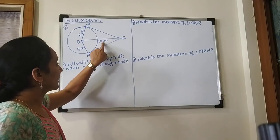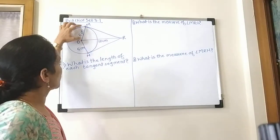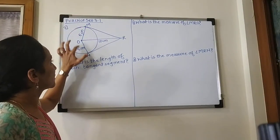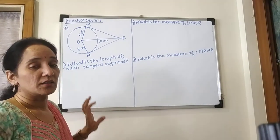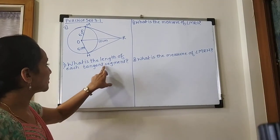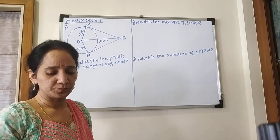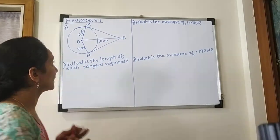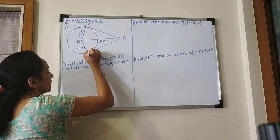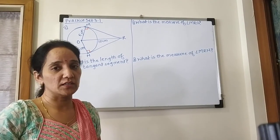The length of OR is 10 cm and the radius of this circle is 5 cm. What is the length of each tangent segment? We have to find the length of MR and NR. One question is that this angle is a right angle, compulsory. Because the tangent is perpendicular to the radius.